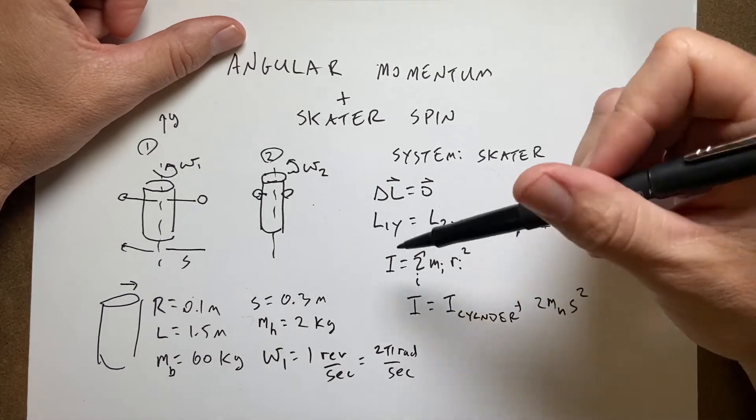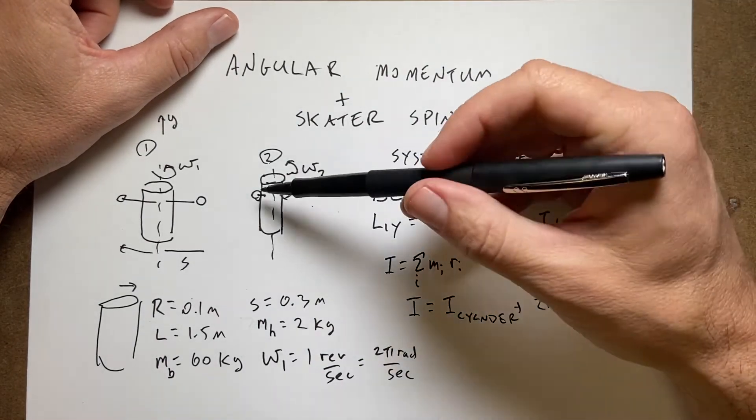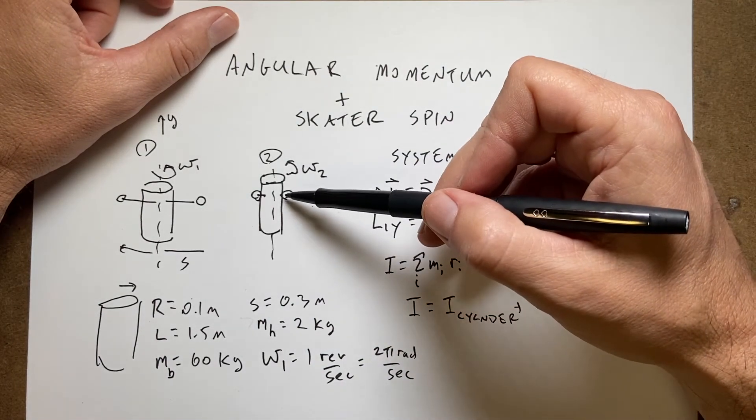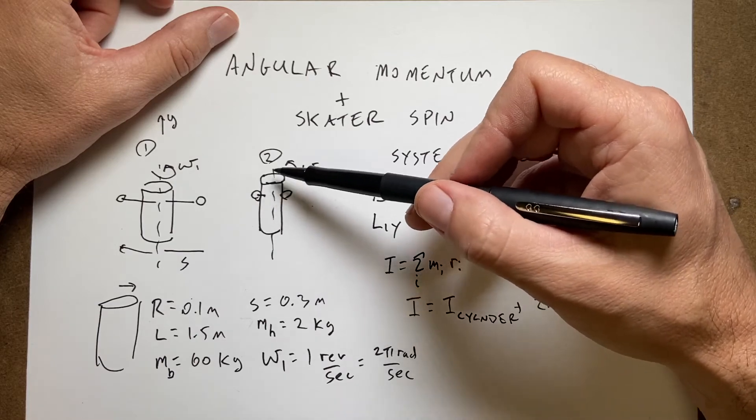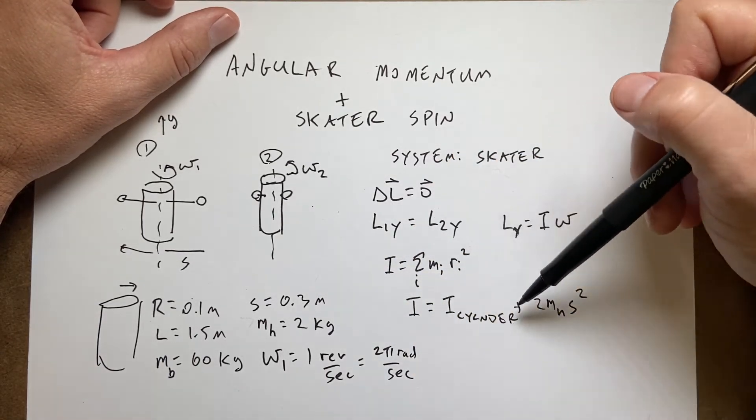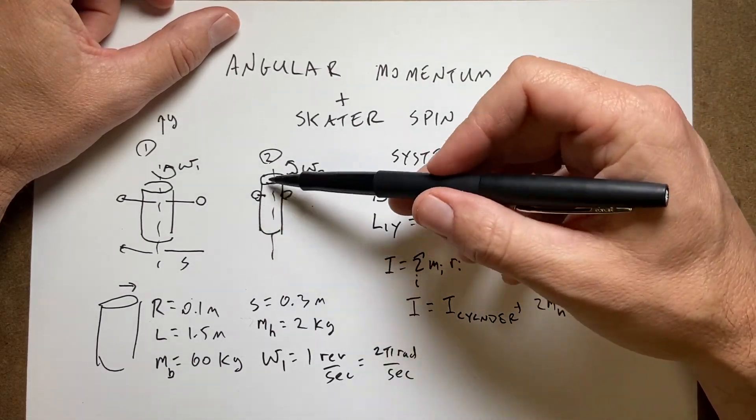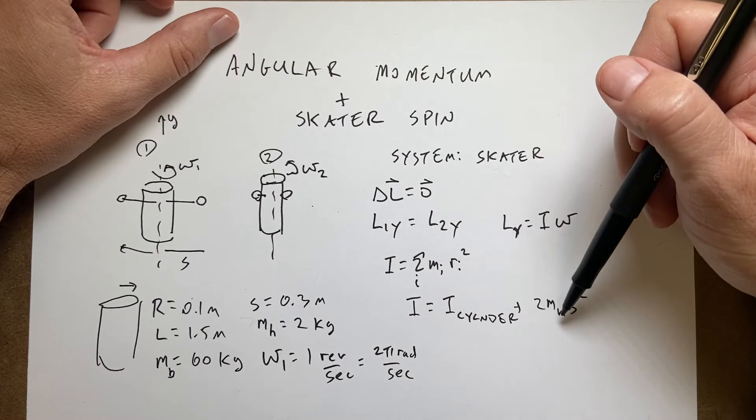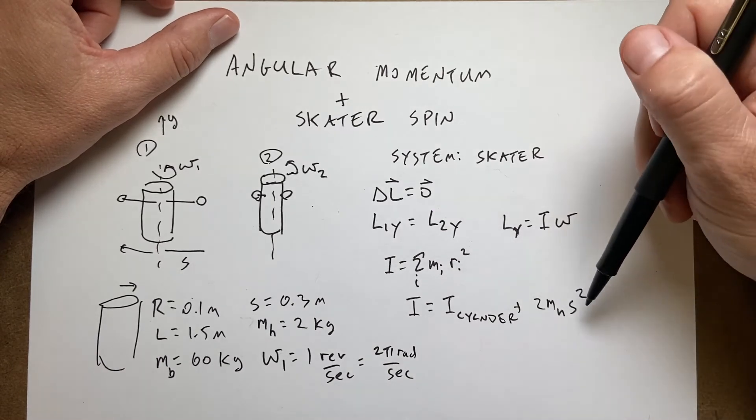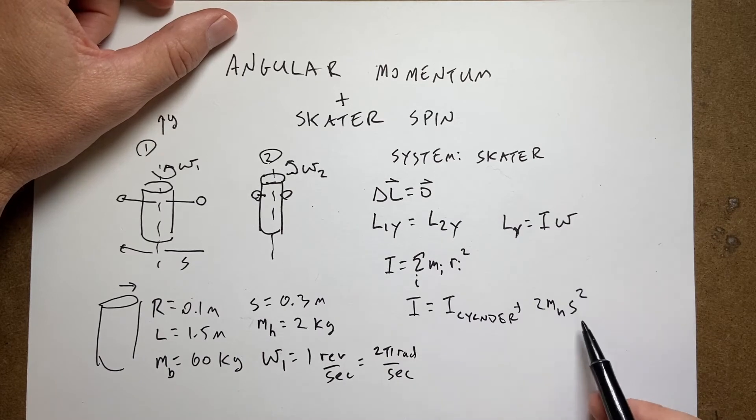So this is the moment of inertia of a cylinder which I can look up and I'm going to tell you in a second. And then each mass has a distance of s from the axis of rotation and a mass of m. So I have two of those. So this is like integrating over all the masses to get all the masses in the cylinder and then this is adding on the hands. And so you notice here that this is going to change. The cylinder doesn't change but those do change.